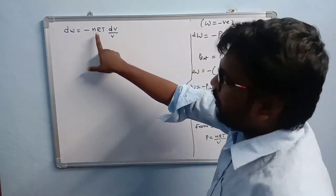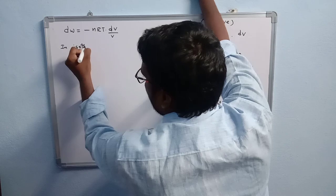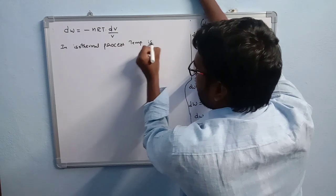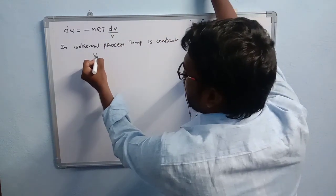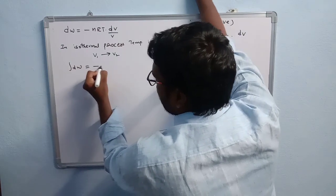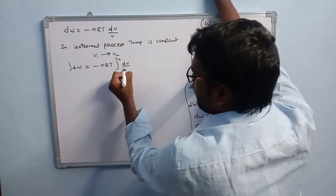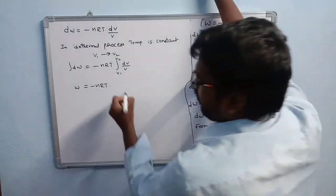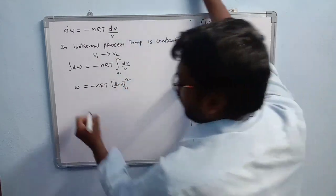In an isothermal process, temperature is constant, and volume changes from V1 to V2. Integrating both sides with limits V1 to V2: ∫dW = −nRT ∫(dV/V). Since n, R, and T are constants, they are taken outside the integral. The integration of dV/V gives ln V, evaluated from V1 to V2.